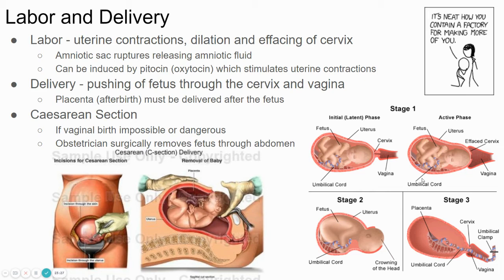Labor is the contractions of the uterus. The cervix starts to dilate and open up and efface — meaning thin out — so the baby can fit through. The baby usually comes out head first. If the fetus is not in that position, it's called a breech position — sometimes the fetus can be feet first. It's generally harder for the baby to be born vaginally with feet first.